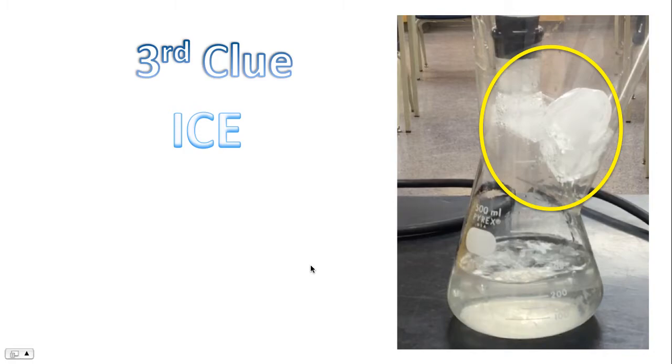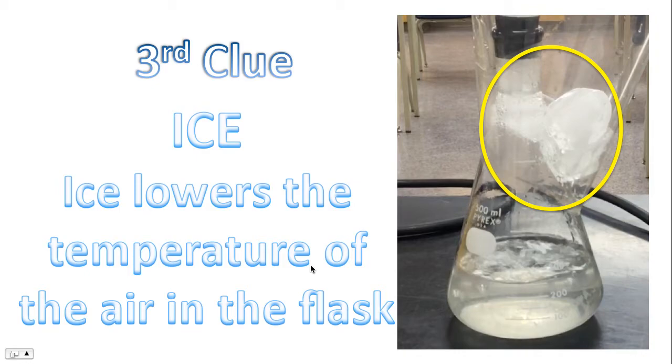Here's the third clue, the ice. Ice has the effect of lowering the temperature of the air in the flask. This is very important.